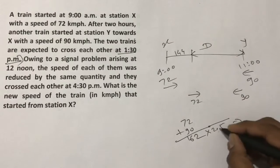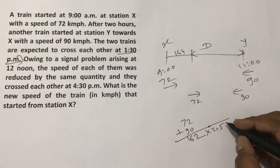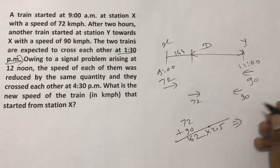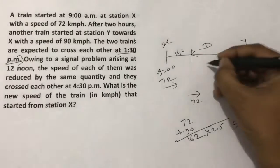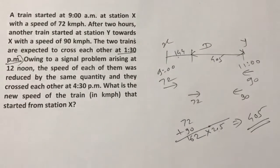162 times 2.5, which is 25 into 16 - carry the 5, that's 4, 0, 5. So 405 km is this distance and this is 144 km.